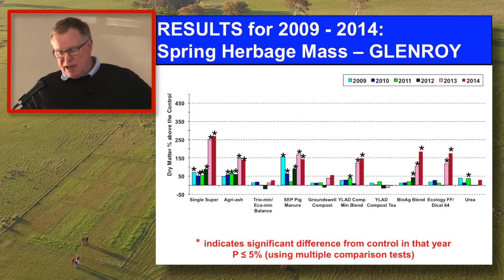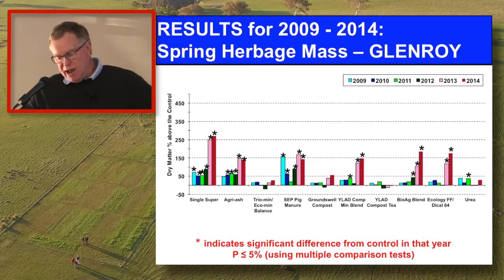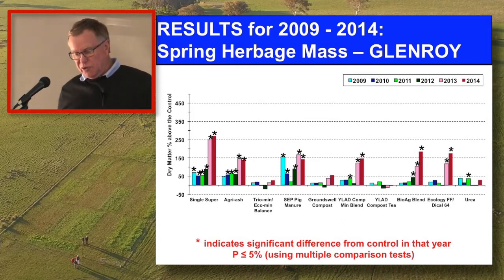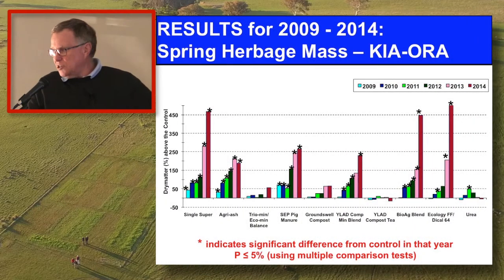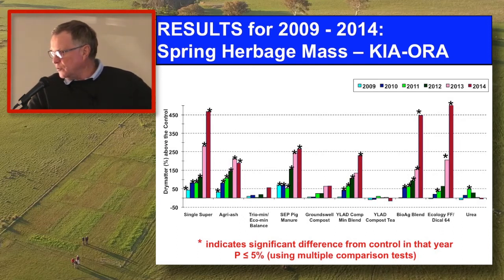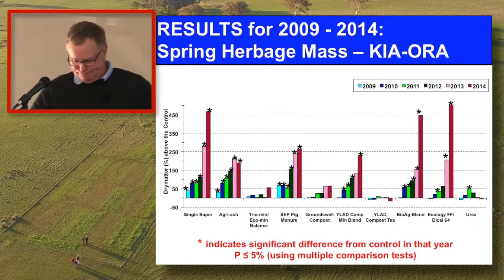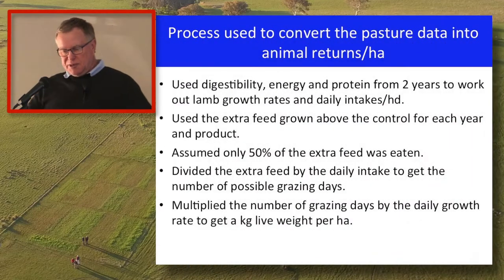Just with the Agriash — it's the second from the left — you'll notice the pink and red years. In 2013 Agriash was very competitive at the Glenroy site, then backed off a bit in 2014. But once we come to Kiora, the difference is very noticeable: how Agriash behaved in 2013 versus how it's behaved in 2014. It's really gone over the top, and that's influencing some of the results. So that's the quality and herbage data — how did I convert this into animal product?